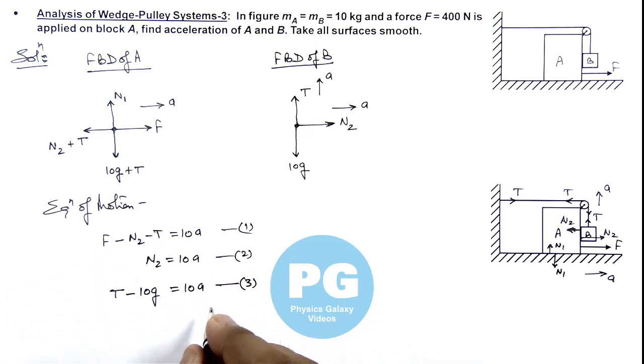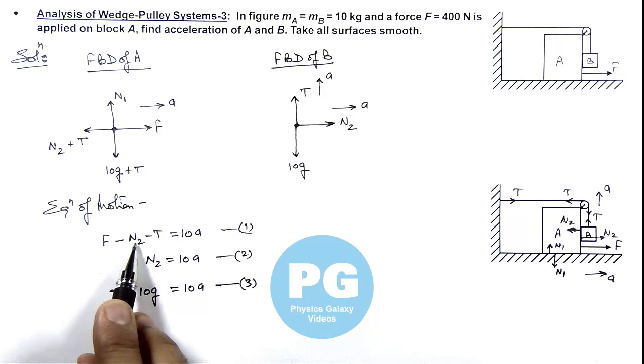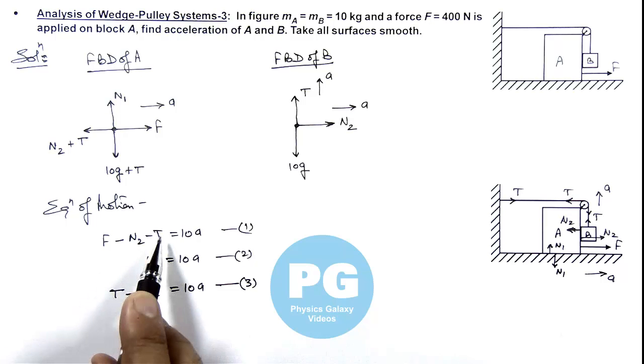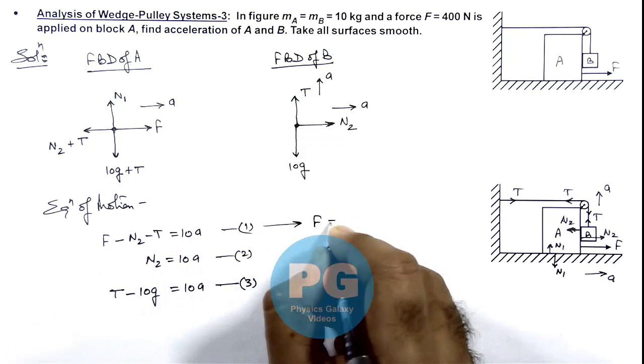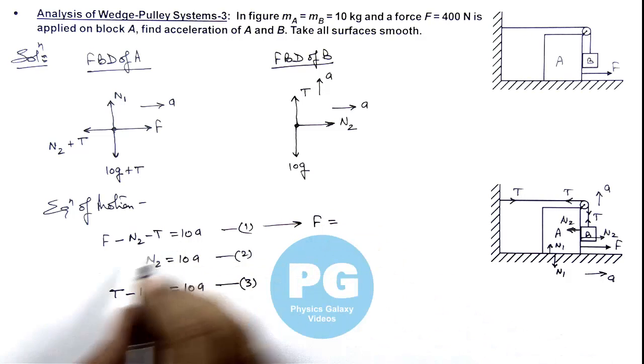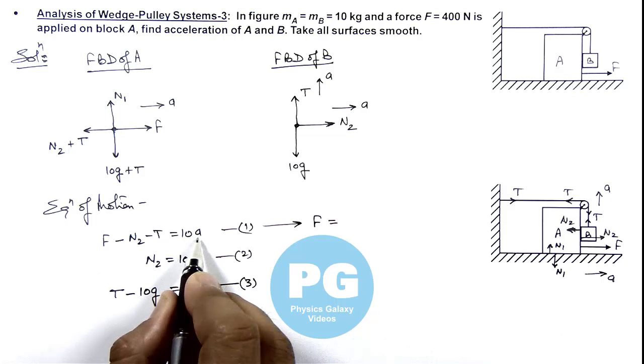From these equations here value of N2 we can substitute here. And value of T also we can substitute here. So from equation 1 you can see we are getting F is equal to on the right hand side if you take N2 this will become 20a.